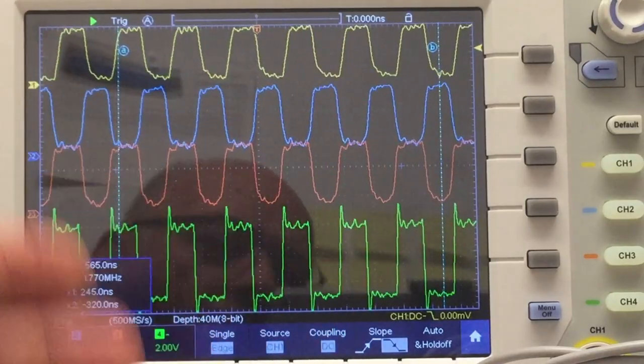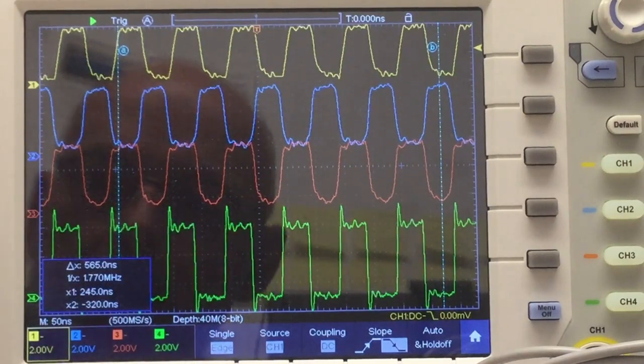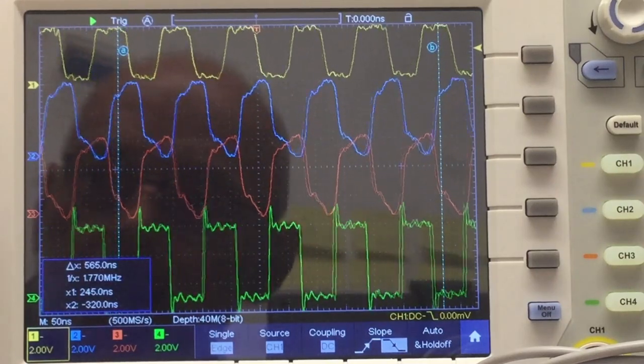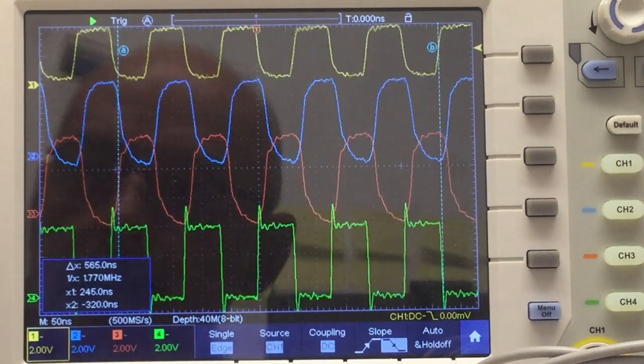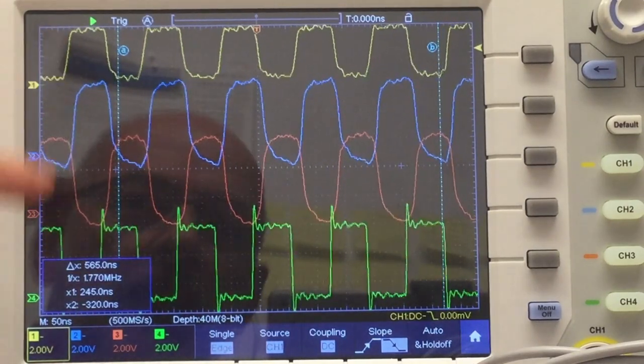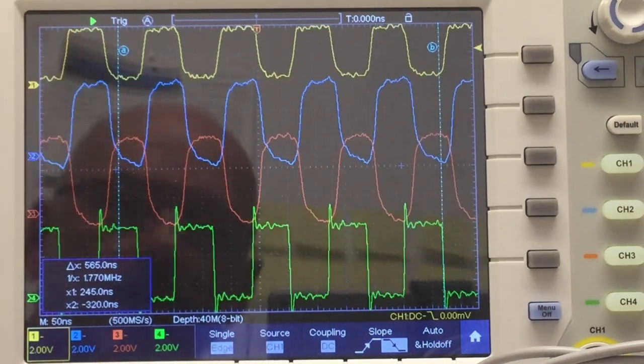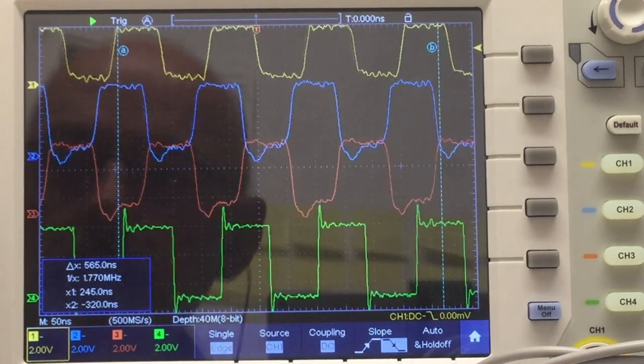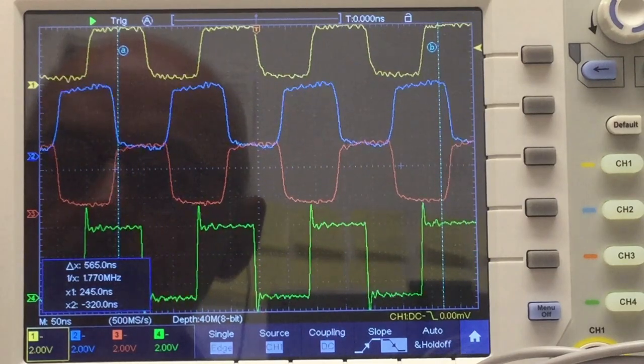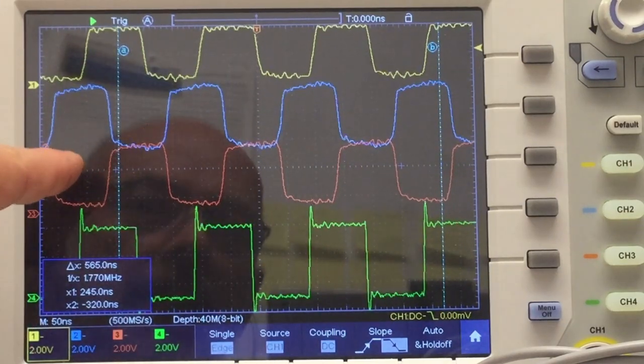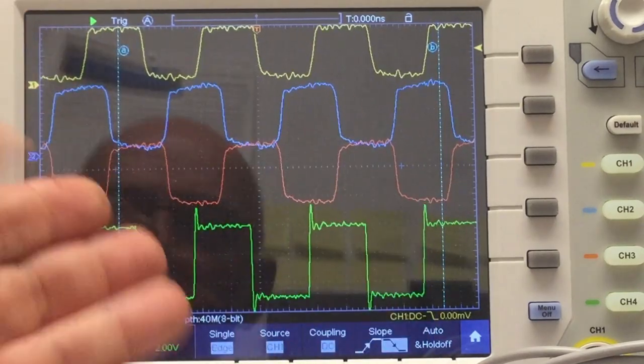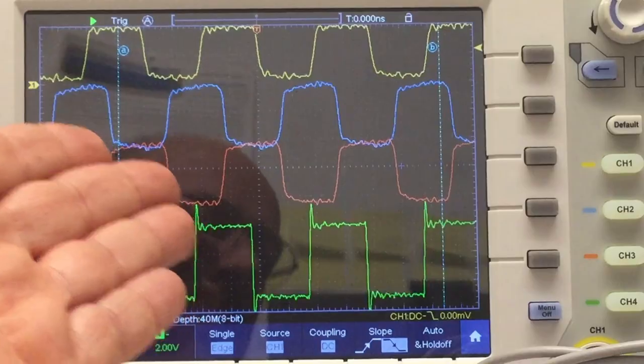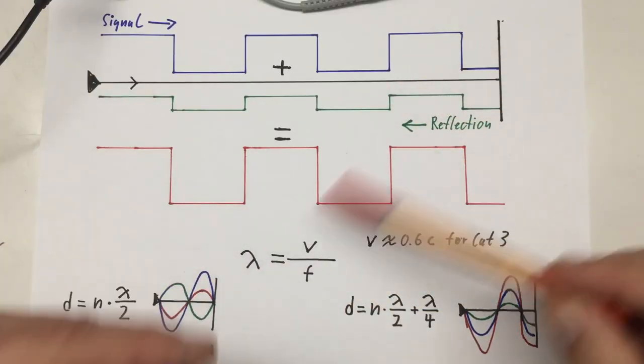We can actually see that on the scope too. We are at 10 megahertz and I'm going down with the frequency. You see the distortion is coming, and at 7.5 megahertz our signal looks good again but has a higher amplitude. Now we go further down to 5 megahertz, some distortions in between, but when we are exactly at 5 megahertz we have a nice signal again, lower amplitude of course. You can do this down to 2.5 megahertz, 1.25 megahertz, etc.